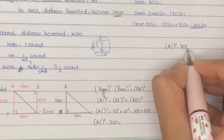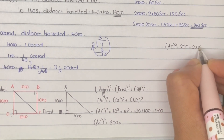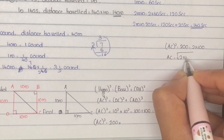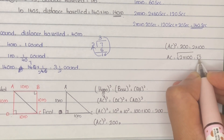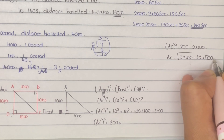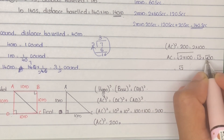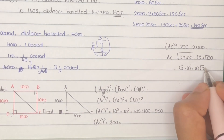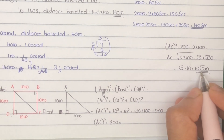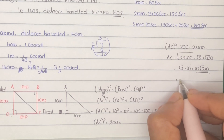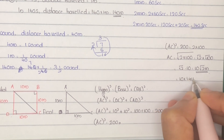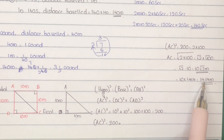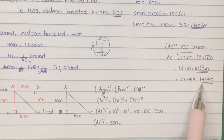So AC² = 200. We can write 200 as 2 × 100, so AC = √(2 × 100) = √2 × √100 = 10√2 metres. Since √2 = 1.414, AC = 10 × 1.414 = 14.14 metres. Therefore, the magnitude of displacement at the end of 2 minutes 20 seconds is 14.14 metres.